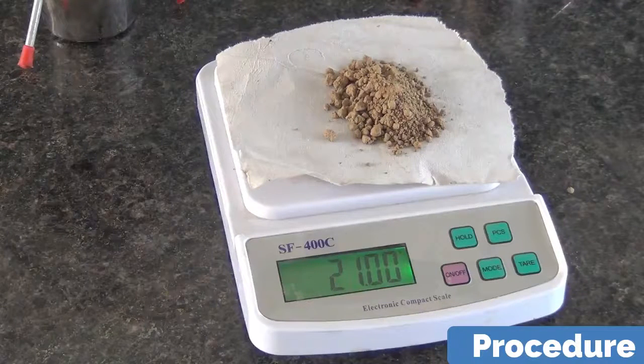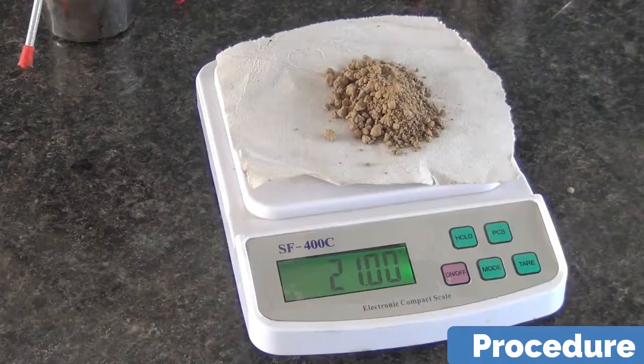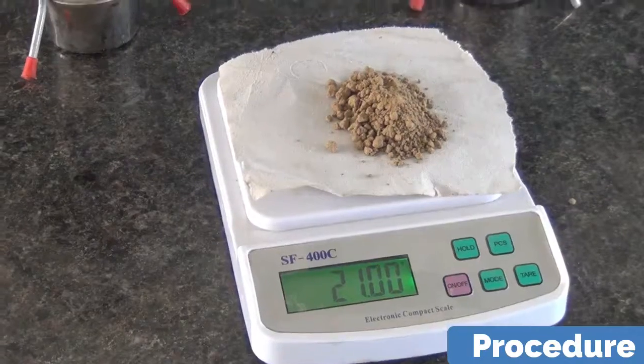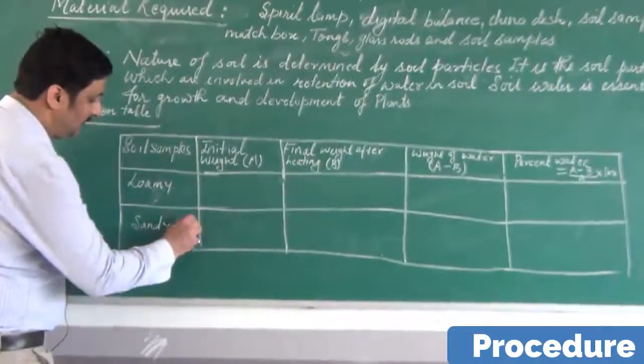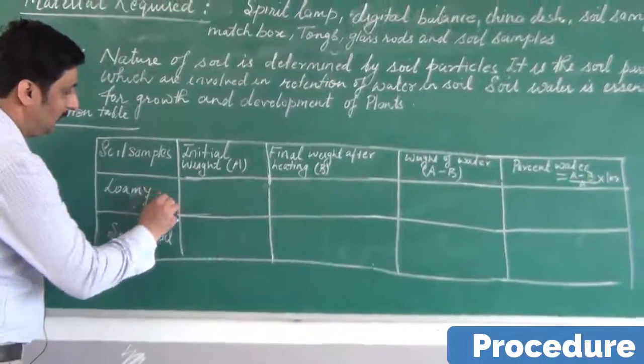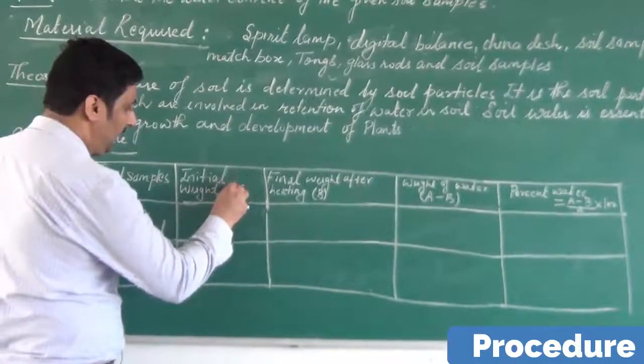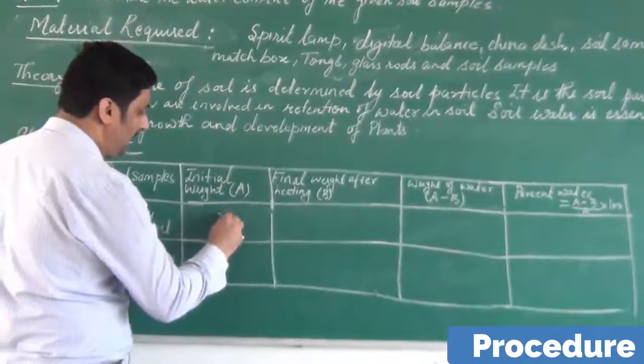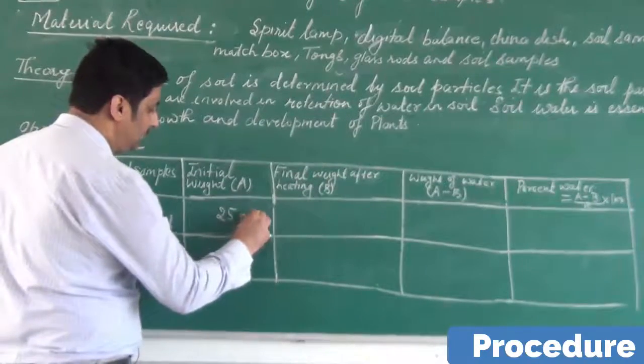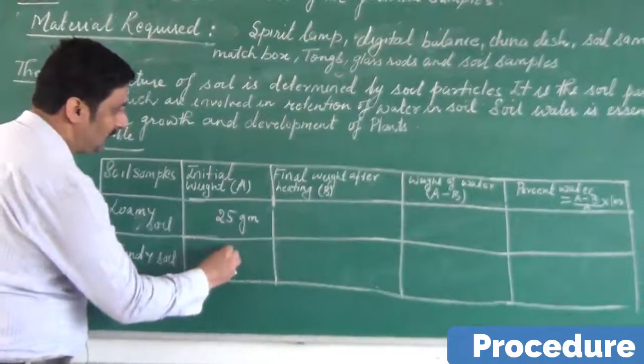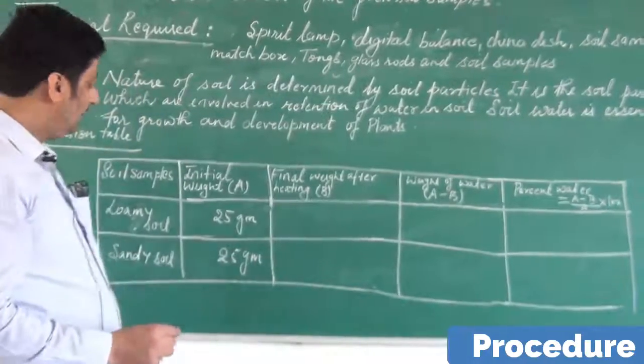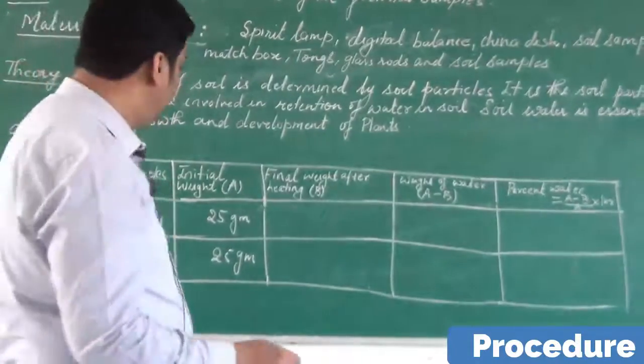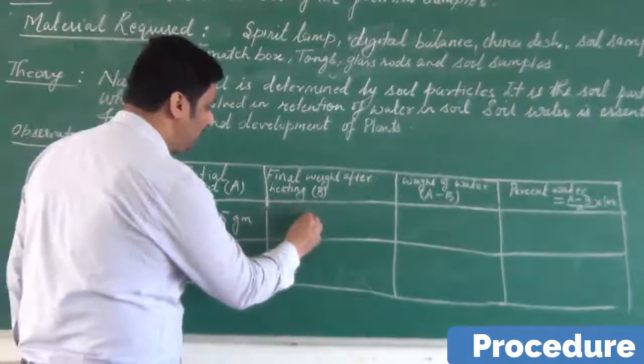Soil samples 1 and 2, you can take here loamy soil and then sandy soil. For loamy soil initial weight A was 25 grams. And for sandy soil it was also 25 grams. Then final weight after heating for loamy soil is about 21 grams.